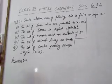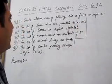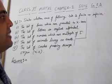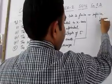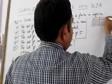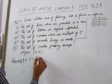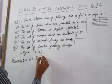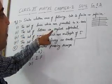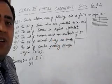Question number 3: state whether each of the following sets is finite or infinite. The first one is the set of lines which are parallel to the x-axis. There are infinite number of lines parallel to the x-axis, therefore the first one is an infinite set.